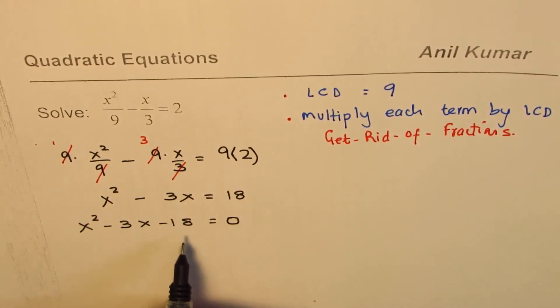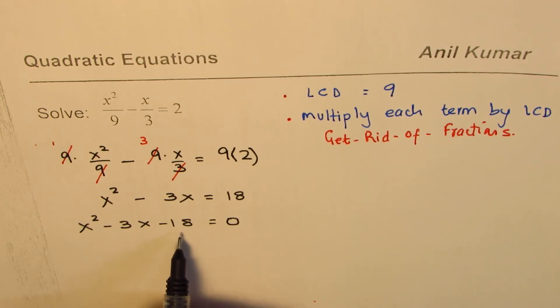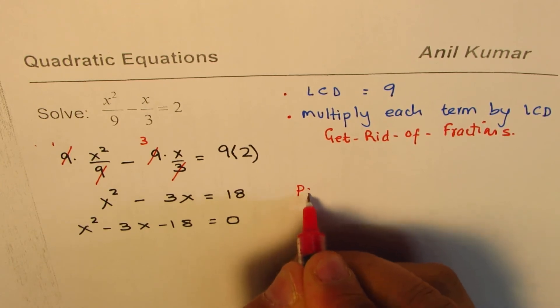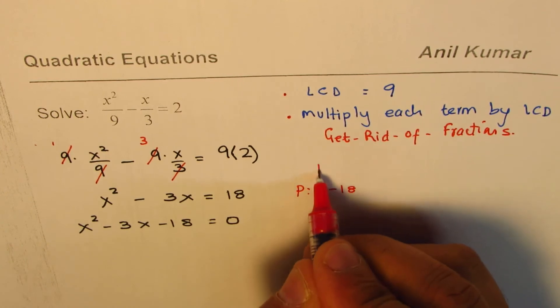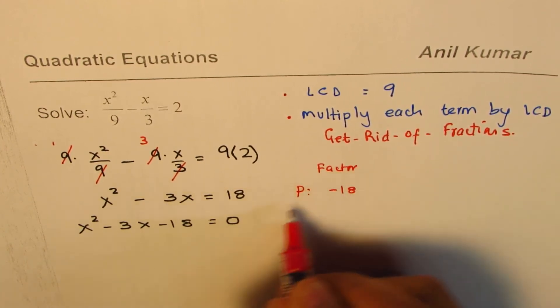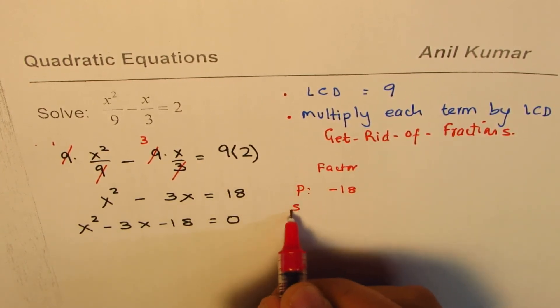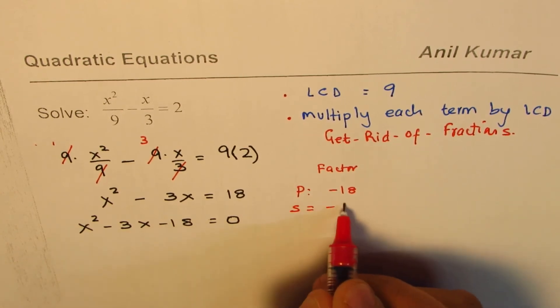At this stage, you can use product sum or quadratic equation. So let's factor this using product and sum. So we are doing factoring now using product and sum. And sum is -3.